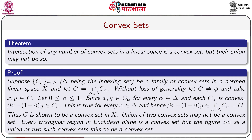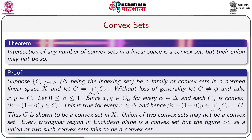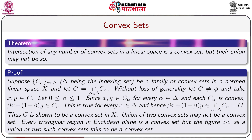Theorem: The intersection of any number of convex sets in a linear space is a convex set, but their union may not be. Proof: Suppose {Cα}, where α ∈ Δ (Δ being the indexing set), is a family of convex sets in a normed linear space X. Let C = ∩Cα, where the intersection is taken over α ∈ Δ. Without loss of generality, let C be non-empty.